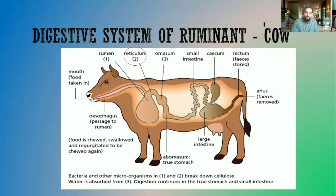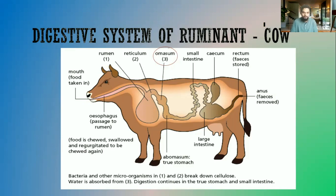When the food is now partially digested after being chewed again in the mouth, it goes into the next structure called the omasum. In the omasum, excess liquid is removed — water and some fatty acids that are present are also removed — and the remaining solid passes into the abomasum.